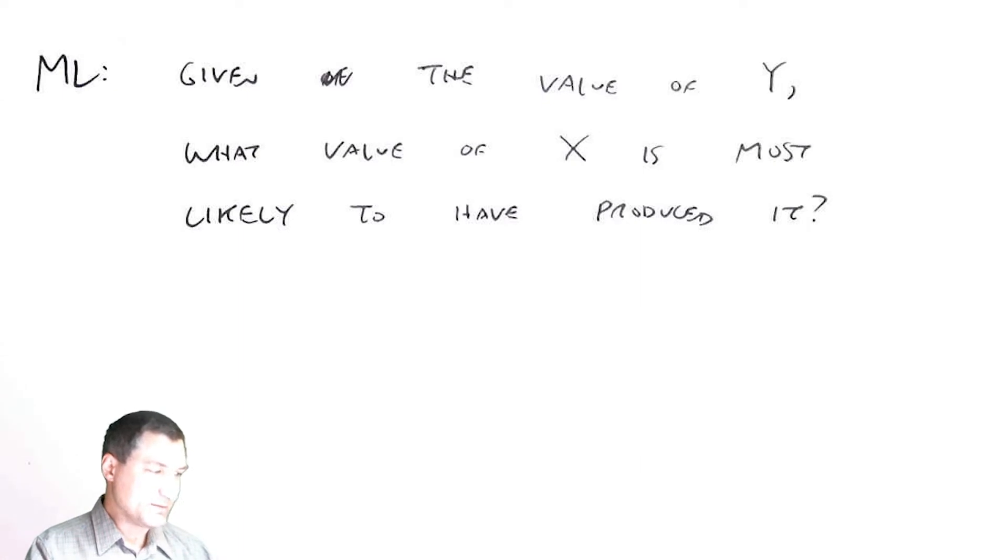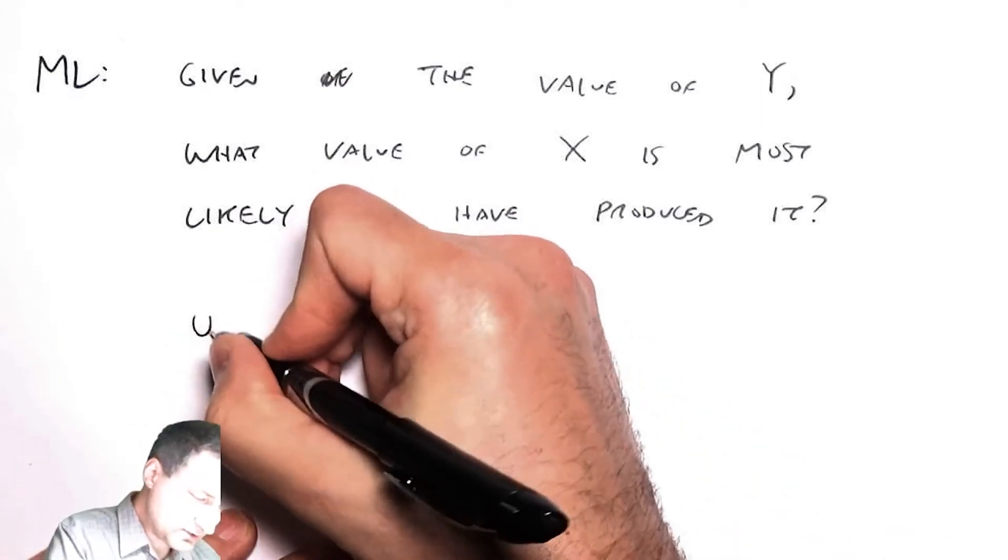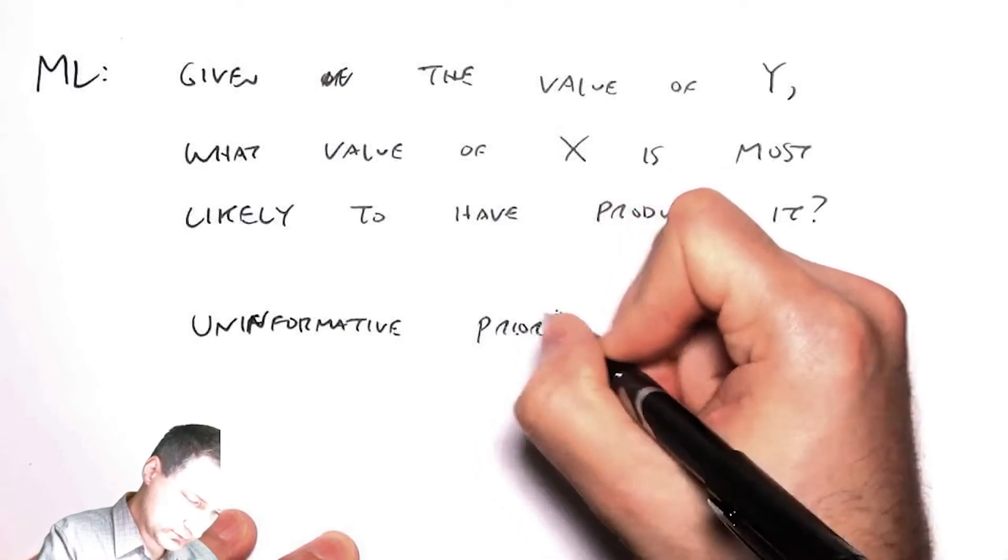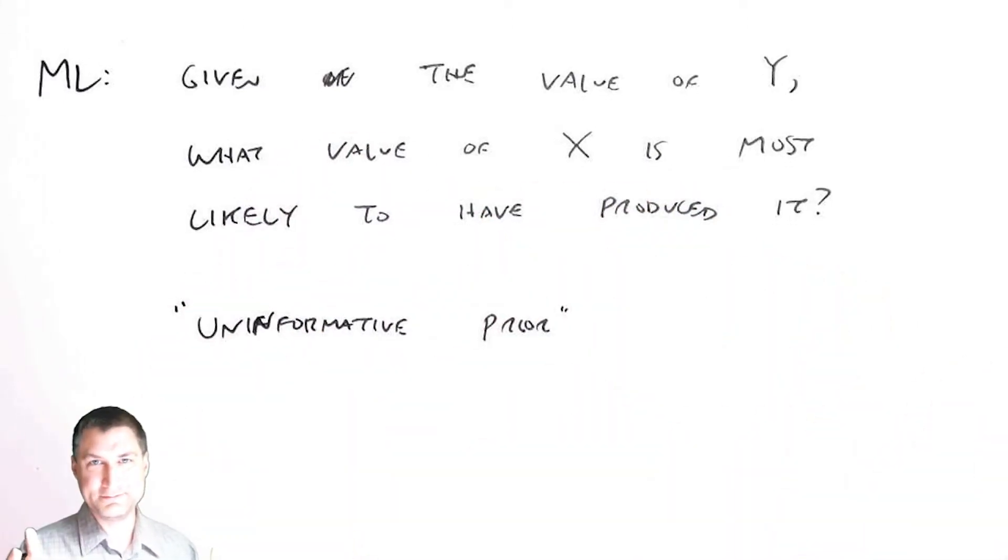I know this is a subtle difference between this and MAP estimation. The distinction is that for ML, we assume we don't know anything about the prior probabilities of x. Sometimes you hear this called an uninformative prior, or you're agnostic about the prior.